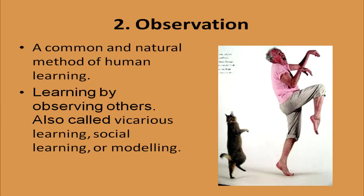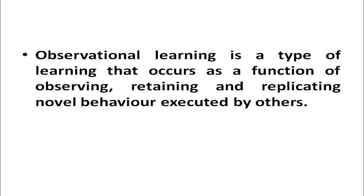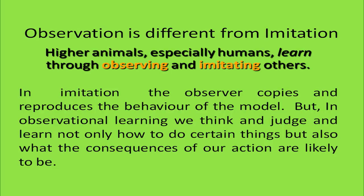The next method is observation. Observation is a common and natural method of human learning. Learning by observing others is also called vicarious learning, social learning, or modeling. Observational learning is a type of learning that occurs as a function of observing, retaining, and replicating novel behavior executed by others. Observation is different from imitation. In imitation, the observer copies and reproduces the behavior of the model, but in observational learning, we think and judge — and learn not only how to do certain things, but also what the consequences of our actions are likely to be.